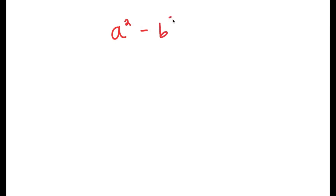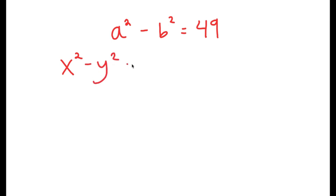In this video, I'm going to solve the equation a squared minus b squared is equal to 49. To solve this, I'm going to use the property that states that if I have something in the form x squared minus y squared, this is equal to x plus y times x minus y.